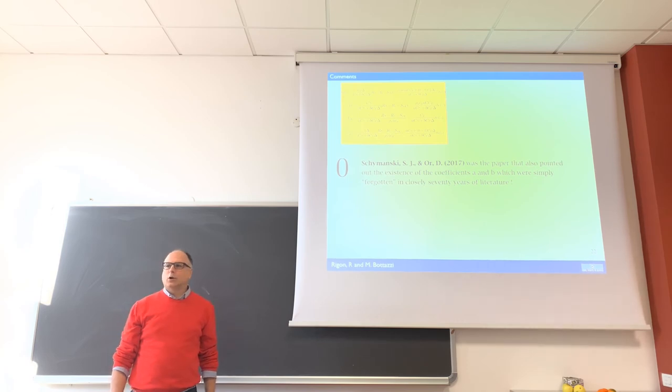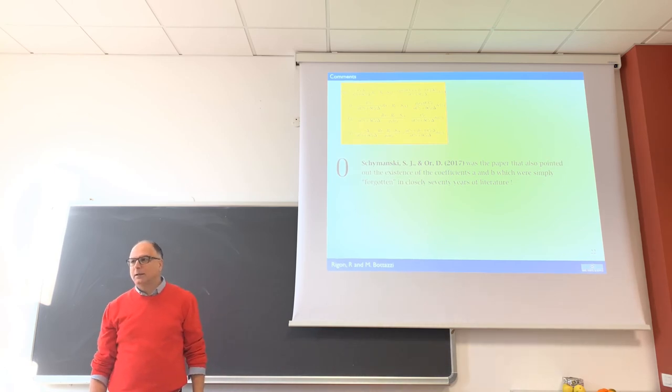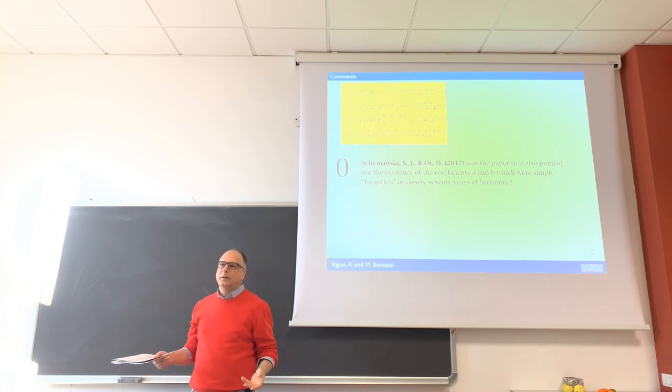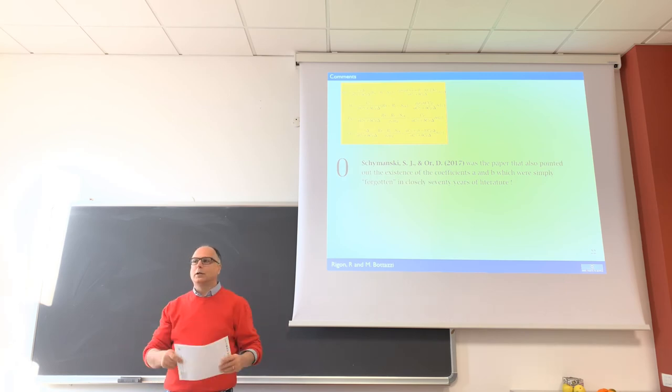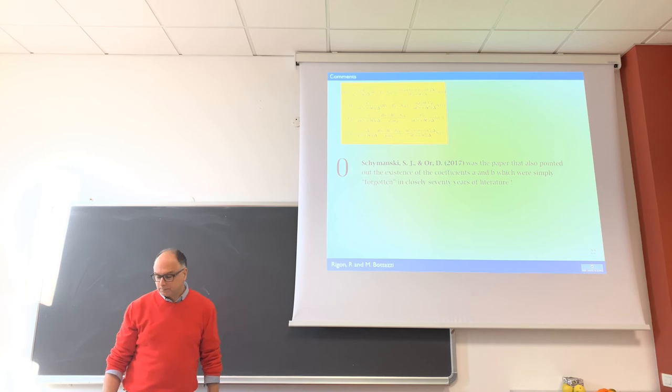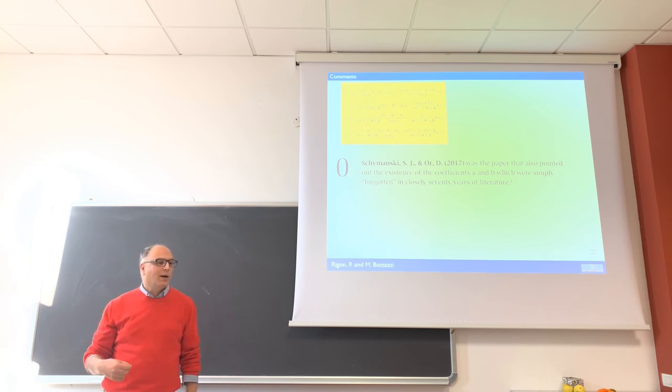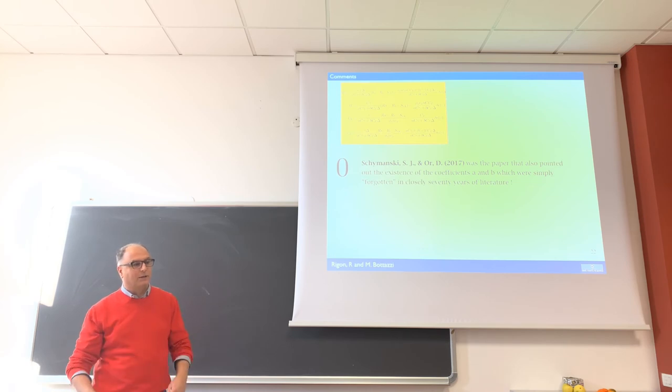This paper by Schymanski et al was the first paper that pointed out that actually there were these two coefficients A and B according to where we were doing the energy budget. But in the treatment of the problem, the fact that we were solving the energy budget was not clear at all. People got confused for 70 years. But A and B can be one and two, so some of those factors can be twice the value we were used to estimate.